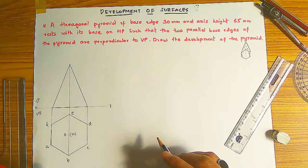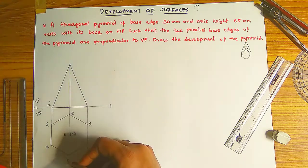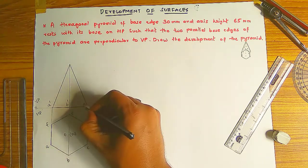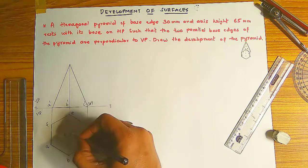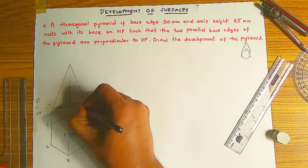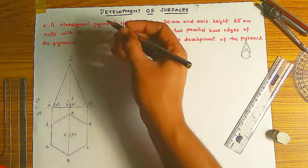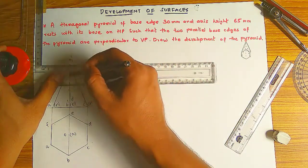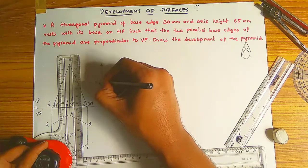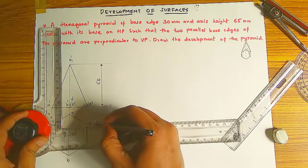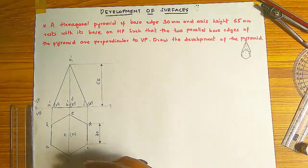Now do the labeling on the front view by checking visibility from the top view looking downward. A is visible — write A dash. B is visible — B dash. C is visible — C dash. D is not visible — write D dash in brackets. E is also not visible — in brackets. F is also not visible — in brackets. Write O dash for the apex and O1 dash at the base. Then show dimensions: axis is 65mm and side of hexagon is 30mm, using extension lines and dimension lines with arrow marks.